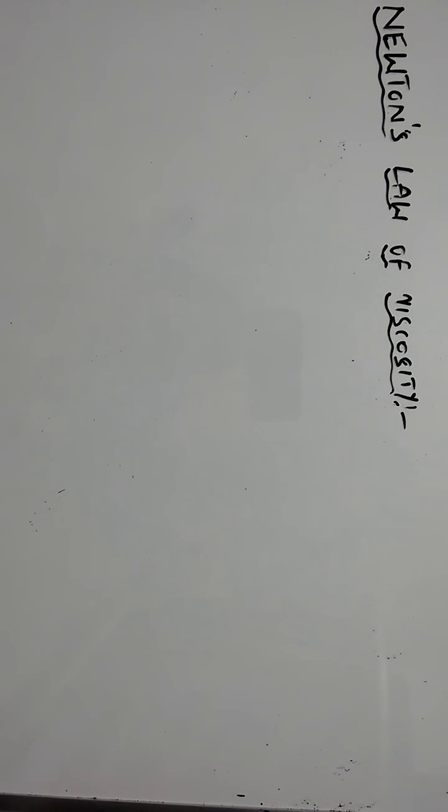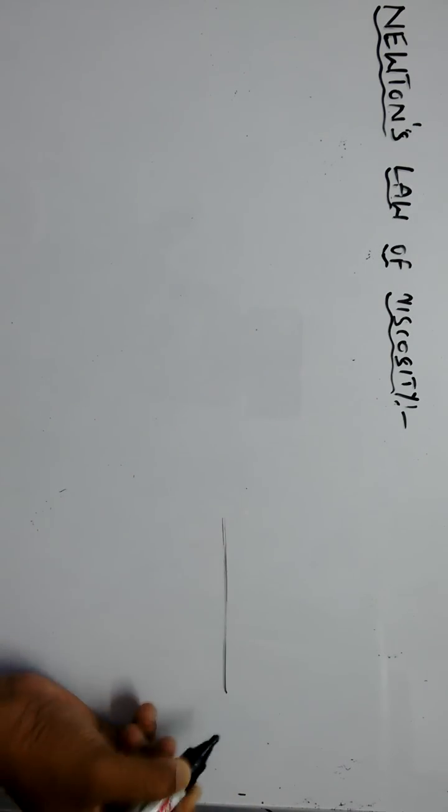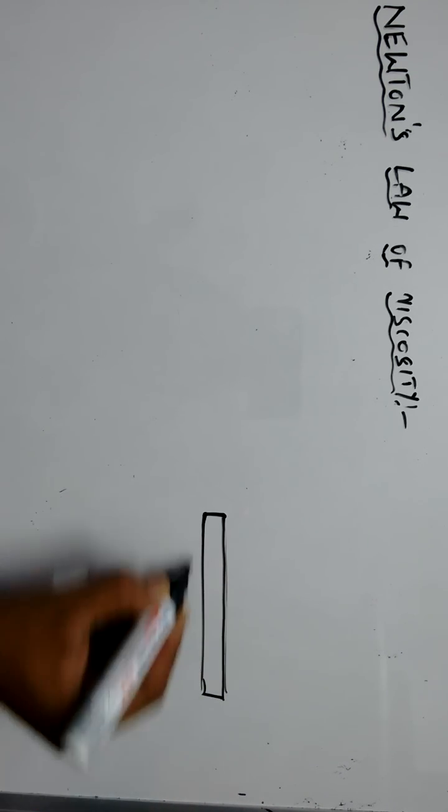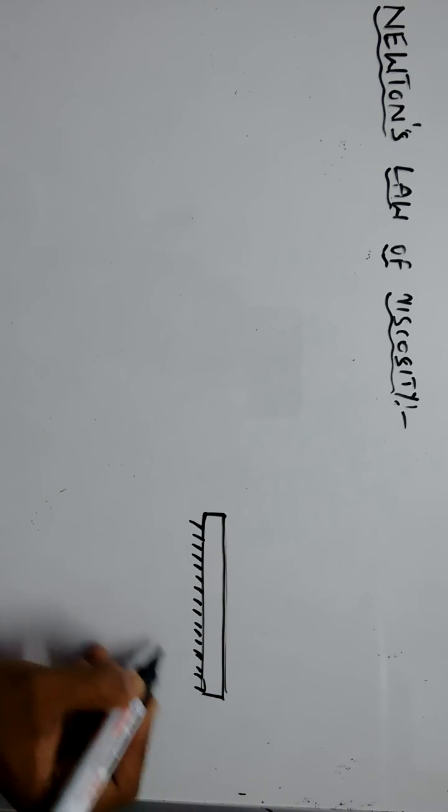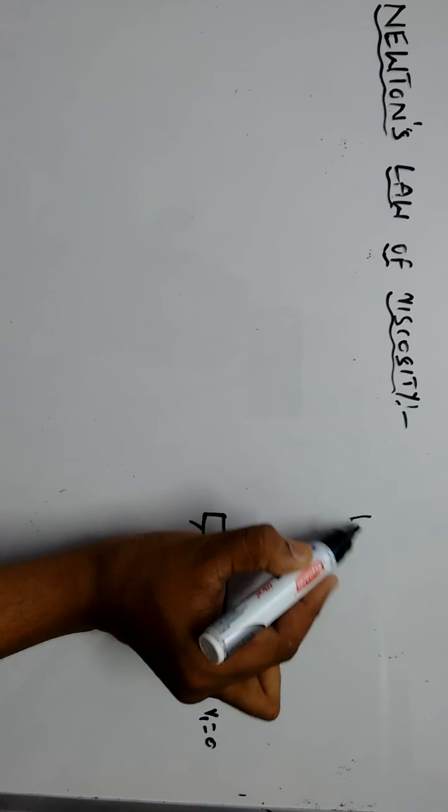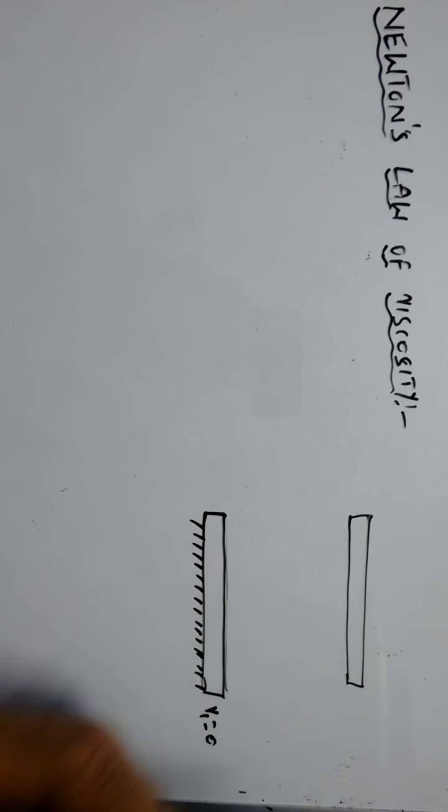Let us consider a number of fluid layers between two parallel plates. The bottom plate is a fixed plate, meaning the velocity is zero here, and the top layer is moving with certain velocity.